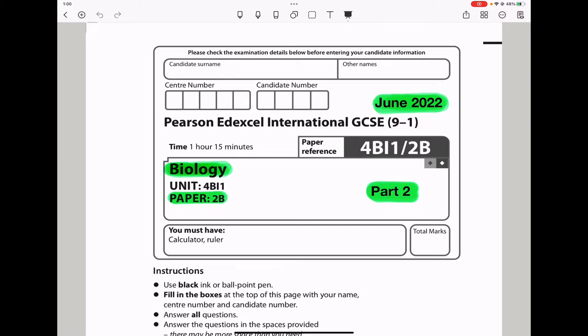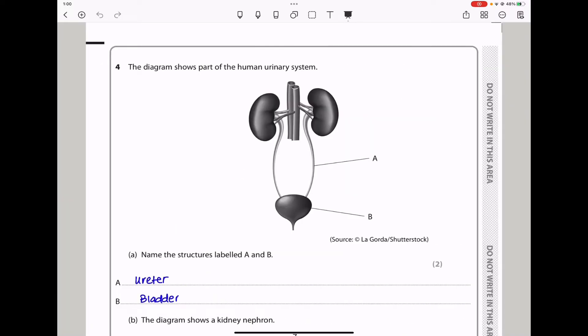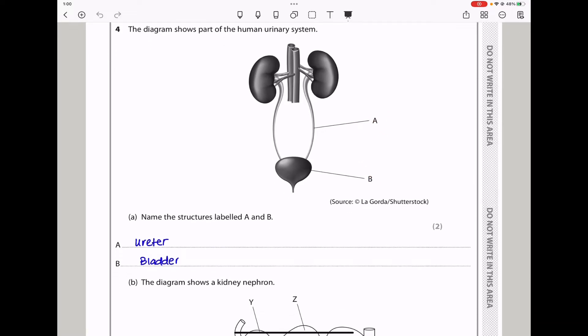Let's begin with the first question. Question 4 says the diagram shows part of the human urinary system. We can see the kidneys. We have part labeled A as well as B. They ask, name the structures labeled A and B. A is the ureter and B is the bladder, as I have written them here.